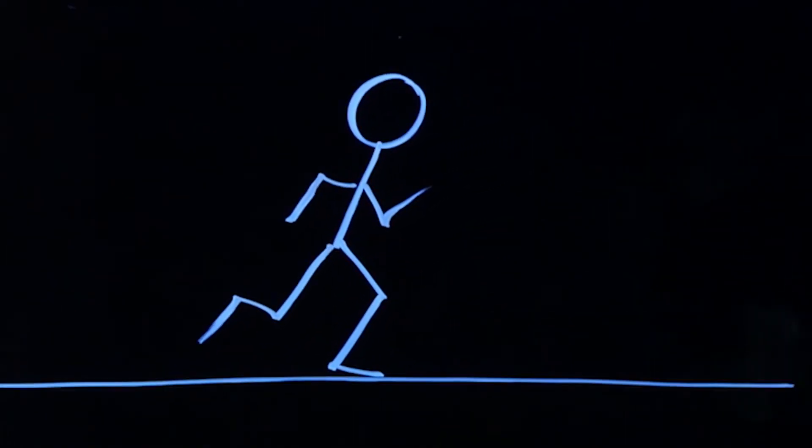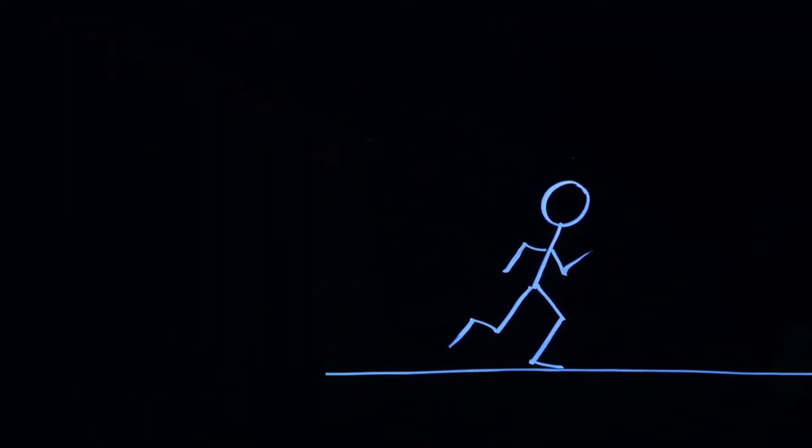And what we want to do is be able to describe the position, the velocity, the acceleration of this runner. In order to do that, we need our first mathematical tool, which is a coordinate system. What is a coordinate system?